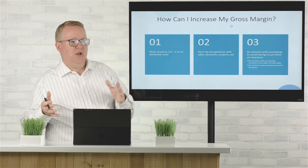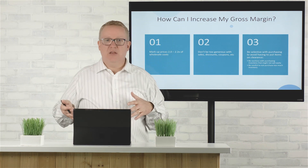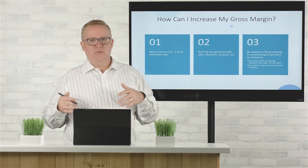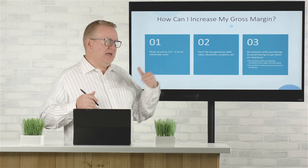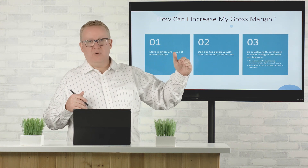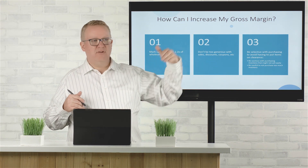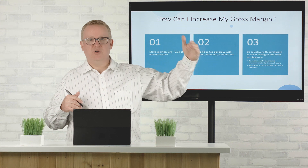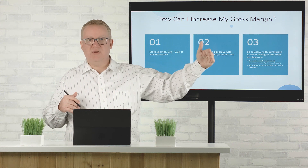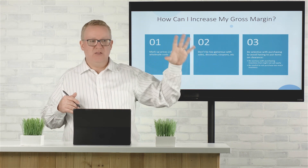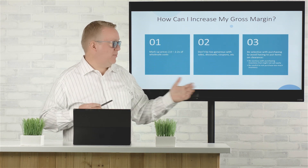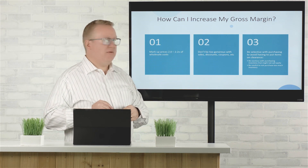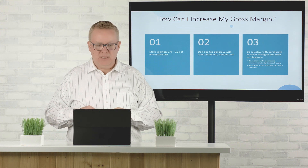So if I get something for $10 from the manufacturer, I want to be putting that at a $20 price — maybe even a few dollars more, $22 or even $24. That's what I'm going to price the product for my consumers.